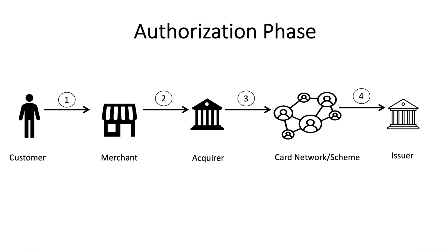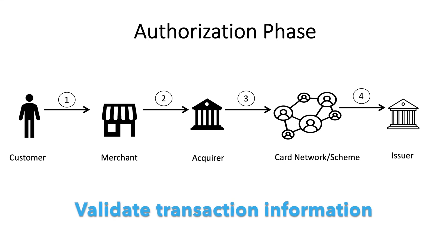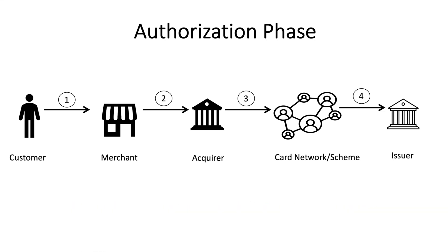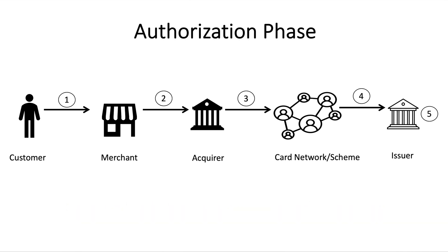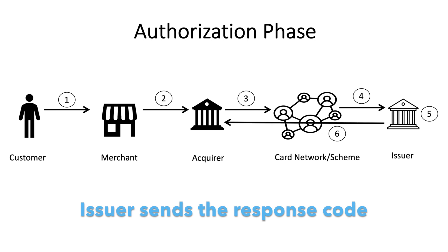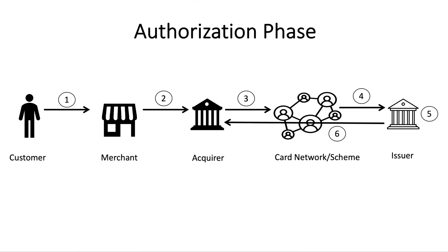When the card network receives the transaction information, it performs basic validation and routes the transaction between the issuing and acquiring banks. The credit card issuer receives the transaction information and responds by approving or declining the transaction, checking that the transaction is valid, the cardholder has sufficient balance, and the account is in good standing. In case of approval, the issuer holds the required amount. A successful authorization code is sent back through the network to the acquiring bank and then to the merchant's terminal or gateway, where it is stored awaiting settlement. The merchant then releases goods or services to the customer.